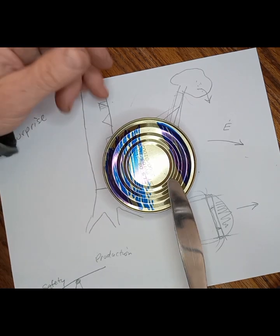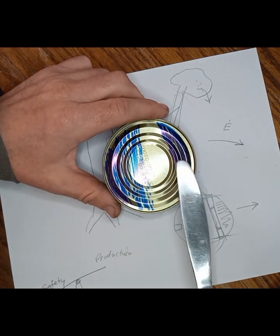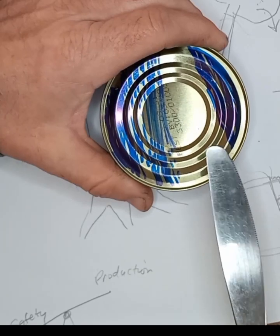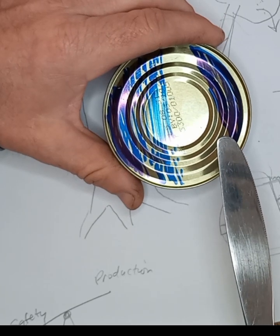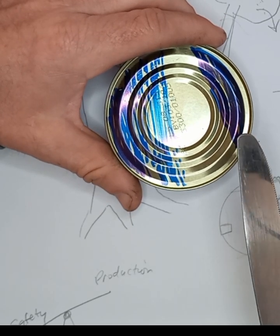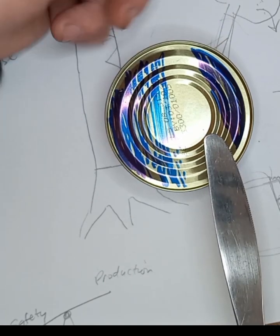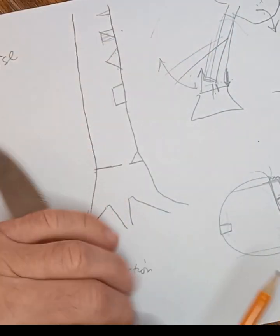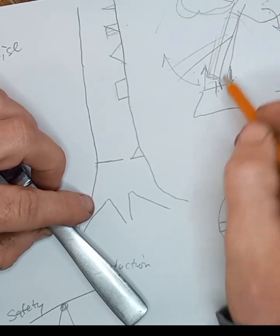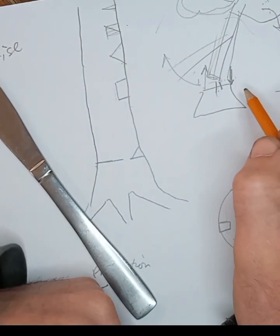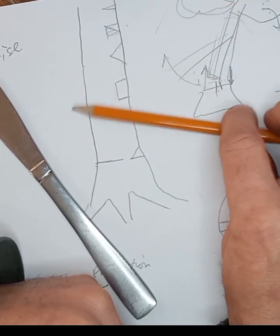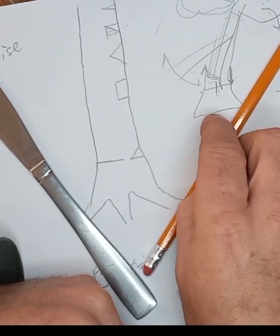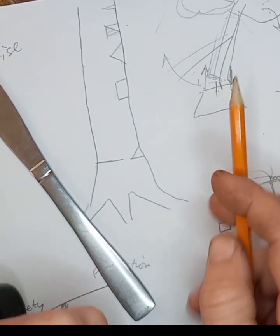So what option do we have to reduce the risk of barber chair and still get feedback? My opinion: the only way to eliminate the chance of barber chair is to sever nearly all of the fiber before the top leans off its center. If this top is sitting up here and almost all of the fiber is severed, it cannot barber chair. All it can do is fall over. It might be able to fall any which way.